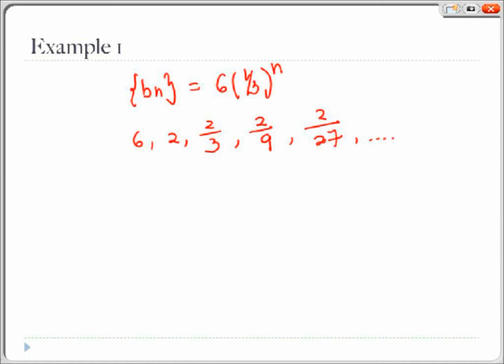A geometric series would have a common ratio between each consecutive term. As we can see from the series, the first and second terms have a common ratio of 1 third. And the following consecutive two terms have the same common ratio as well. So we can conclude that this is in fact a geometric sequence.